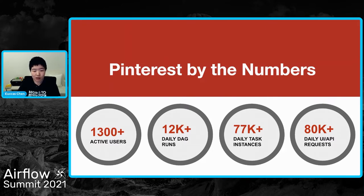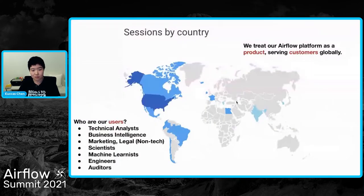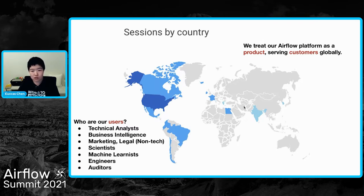Coming back to the Spinner workflow system: today we have more than 13,000 active users — that's about half of the whole Pinterest engineering. And each day there are over 12,000 DAG runs, close to 80,000 task instances, and over 80,000 UI and API requests. That's the scale we operate on. We treat our workflow system as a product serving customers globally. Although our users are only internal, they have a wide range with all types of backgrounds, including engineers and also non-technical people like the legal and marketing team and analysts.